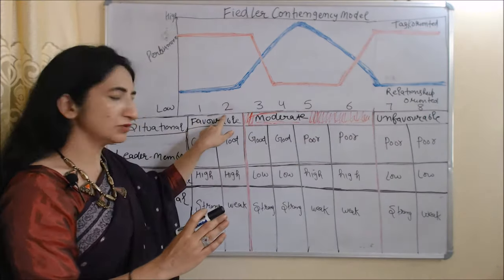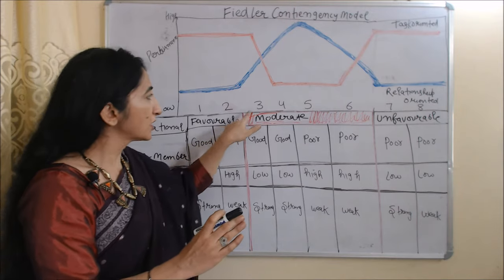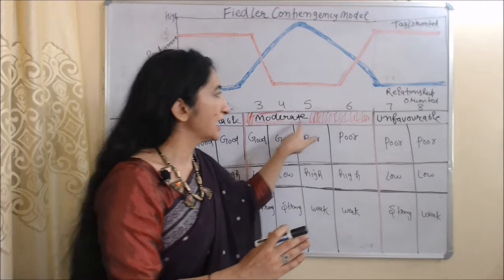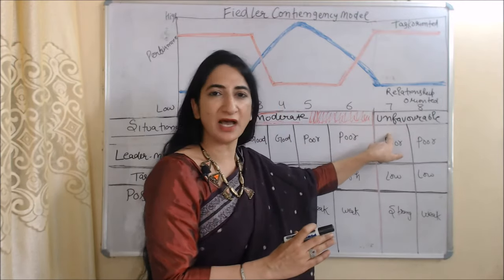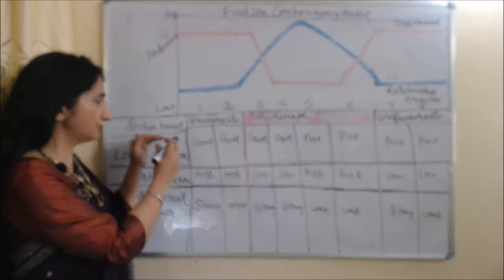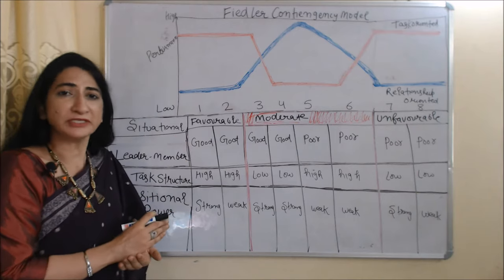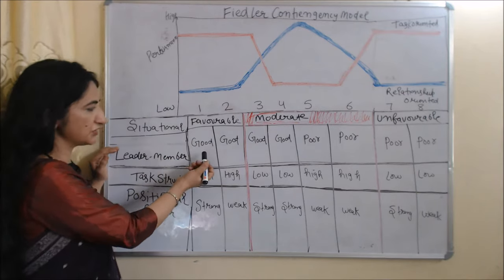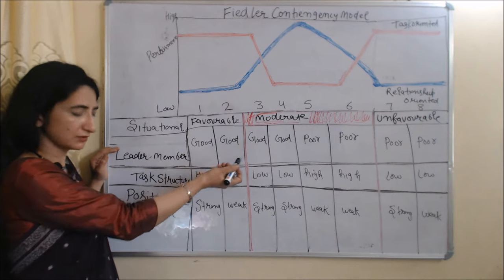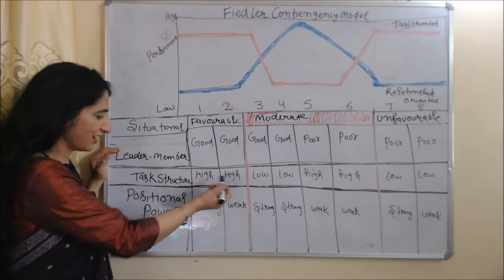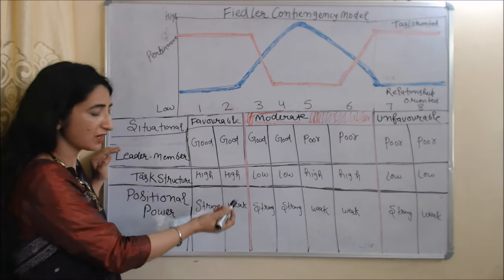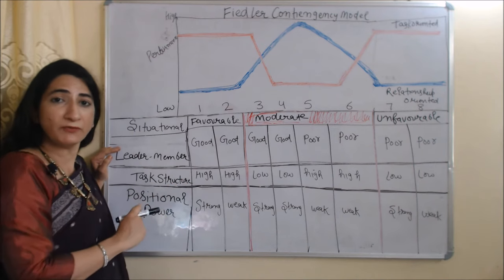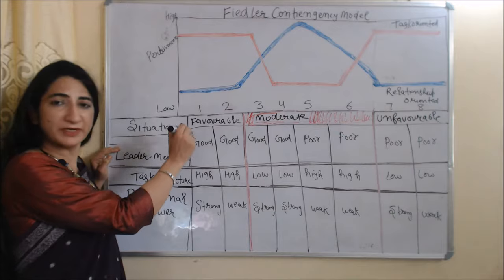Columns 1 and 2 represent a favorable situation, columns 3 through 6 represent a moderate situation, and columns 7 and 8 represent an unfavorable situation. In a favorable situation, everything is in favor of the leader — leader-member relationships are good, task structure is high, and positional power is strong. So it is called a favorable situation.